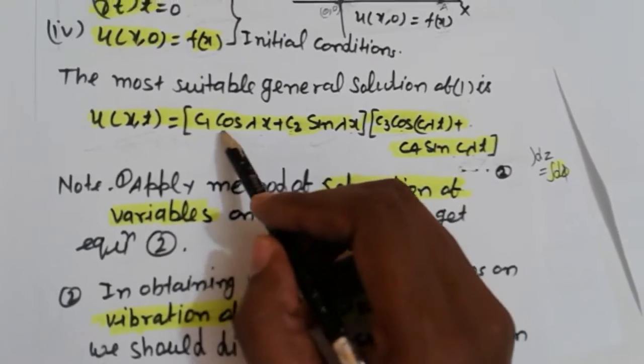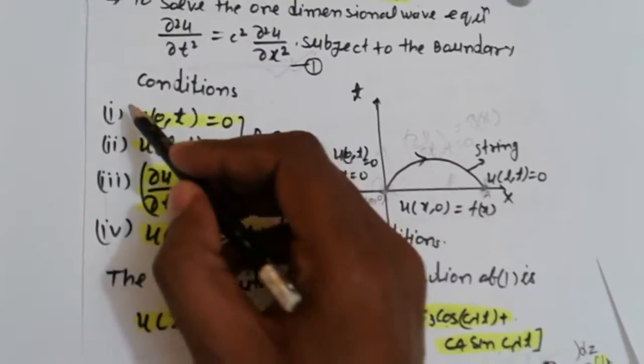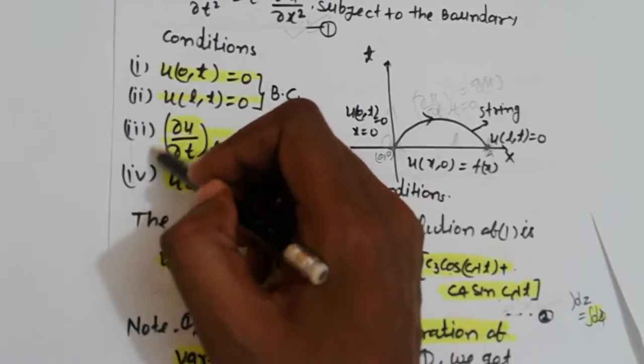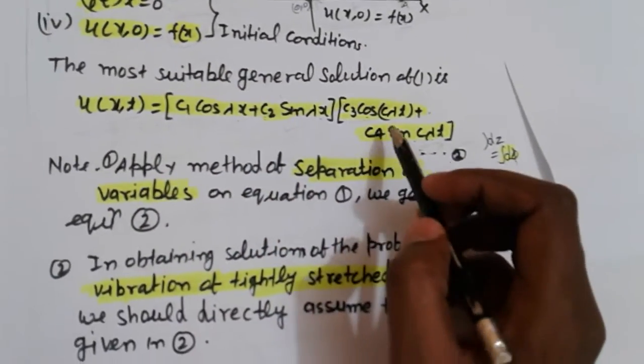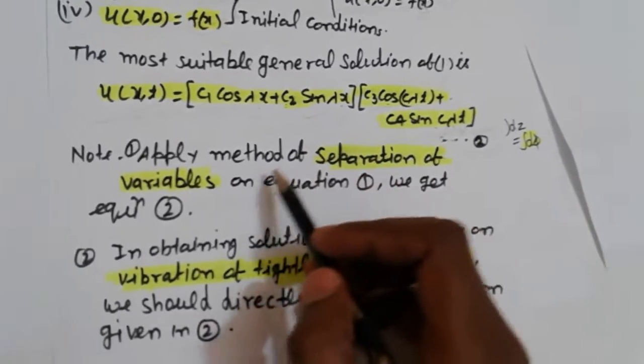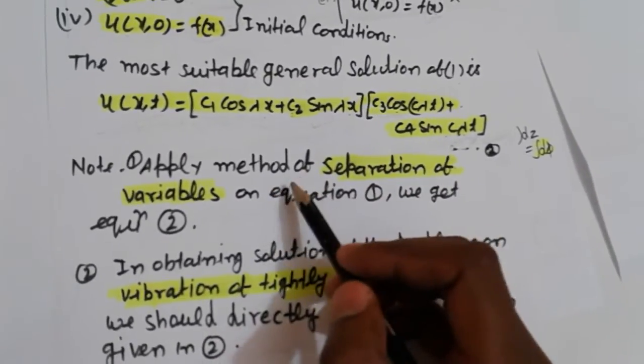So our target: apply boundary conditions i, ii, iii, iv to find out the values of constants and lambda, then evaluate.